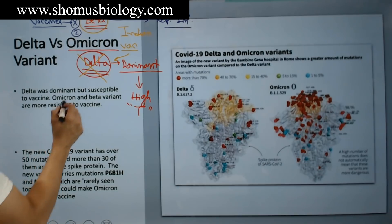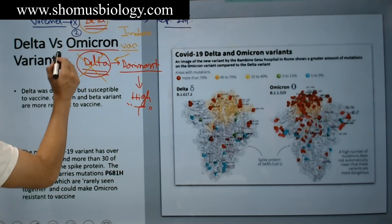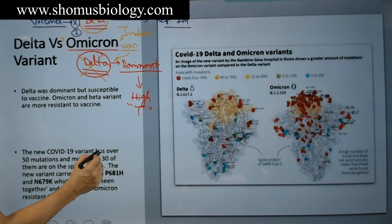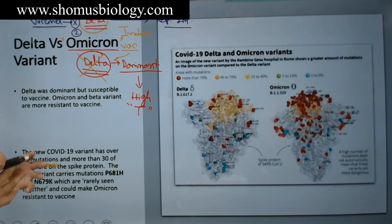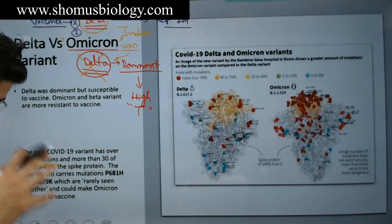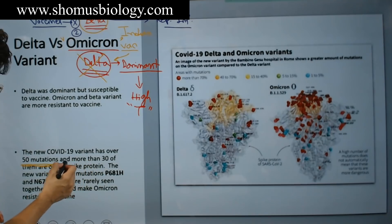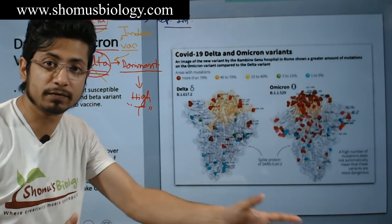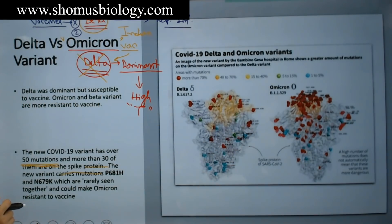When we talk about the Omicron variant, this variant contains 50 mutations in total — 50 different changes — and most of these changes are in the spike proteins. More than 30 of them are present in the spike protein region. So in total, 50 different mutations, with more than 30 in the spike protein, which we can see clearly in the image.